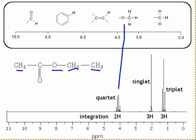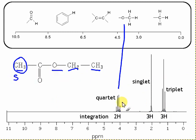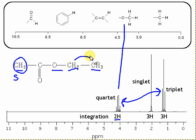Looking at coupling, the three-hydrogen singlet does not couple and so must be the CH3 group on its own next to the carbonyl — that's the singlet. However, there is coupling between the other two groups. The CH2 group is split into a quartet by those three hydrogens on the neighbouring carbon. And this CH3 group is split into a triplet by the two hydrogens on this carbon.